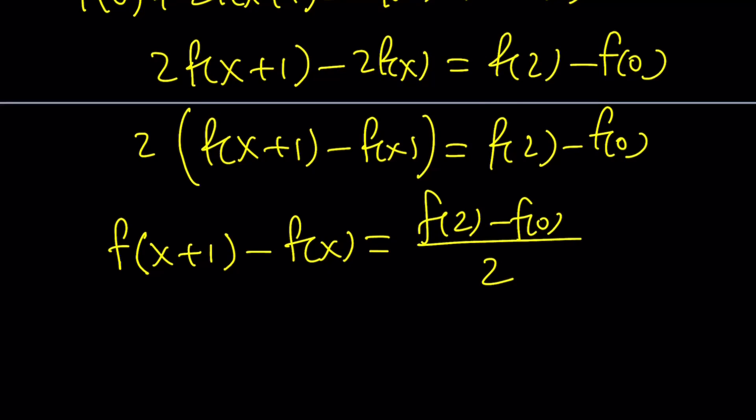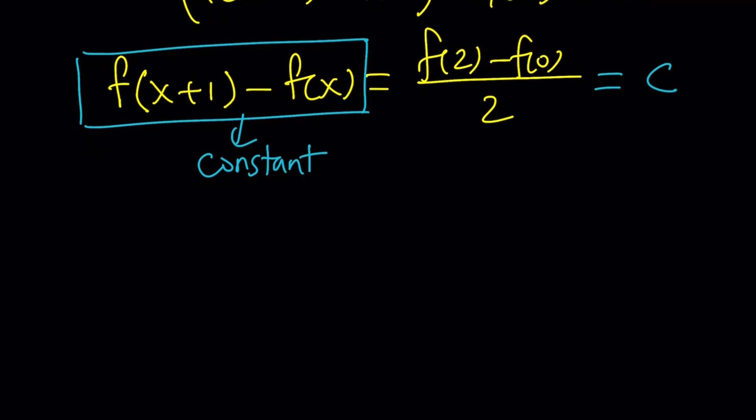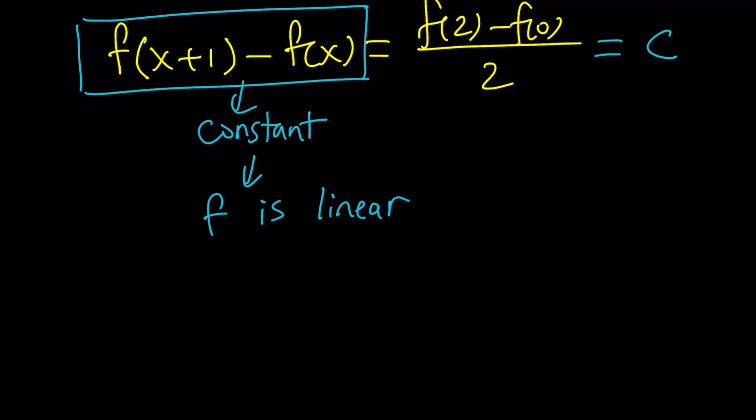Notice that f of 2 and f of 0 are both constants, and their difference is also a constant. And when you divide a constant by 2, it's also a constant. So you could call this c for constant. So f of x plus 1 minus f of x is constant. Now, what does this mean? If x was a real number, this would be a little different. But since x and x plus 1 are both integers, this implies that f is linear. Because with linear functions, you can only get this type of constant difference if you are dealing with integer values. Make sense? Think about the slope of a line.